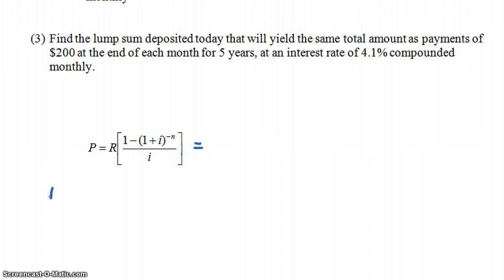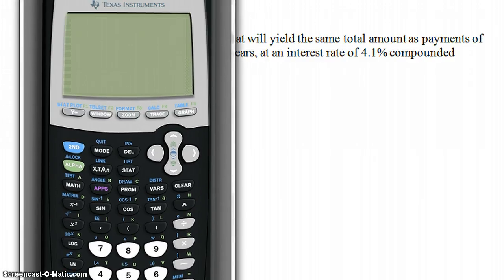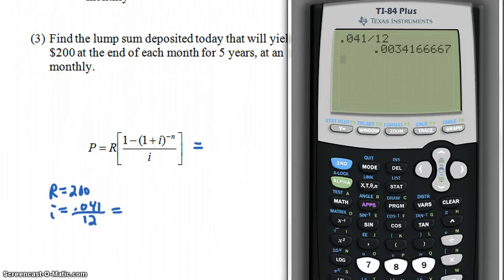So how do we do this? Well, remember that R is 200, that I is 0.041, right, 4.1% interest, but you have to divide it by 12 because it's compounded monthly. Now, I type this into my calculator. In fact, let's try it, 0.041 divided by 12, and I got 0.0034166667.